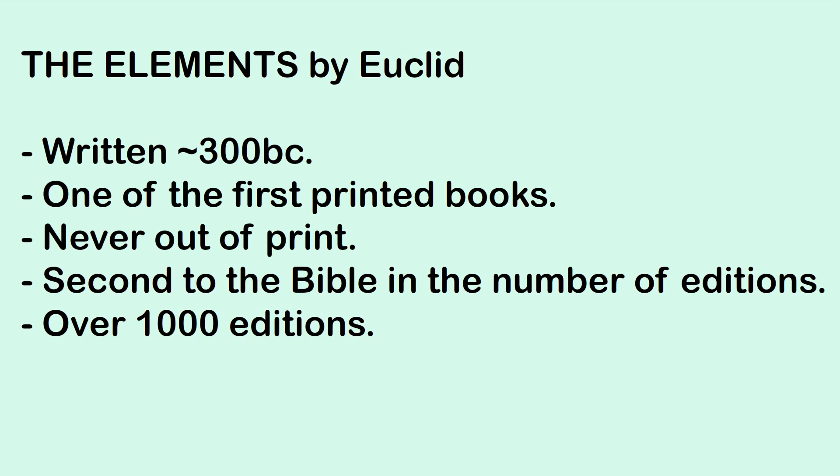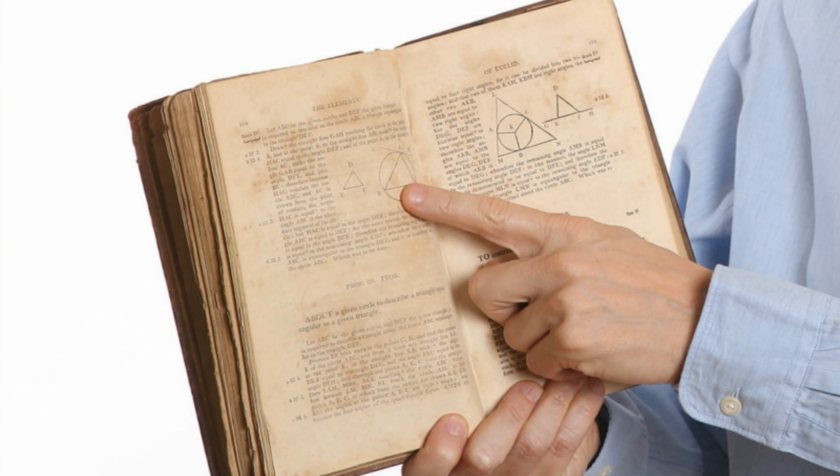Number 5. Euclid was a mathematician around 300 BC in ancient Greece. And he wrote a book, The Elements. It was one of the first printed books after 1482, basically never been out of print. And according to Wikipedia, second only to the Bible in the number of editions. There are over 1000 editions. This one here is mine, and it's over 200 years old.